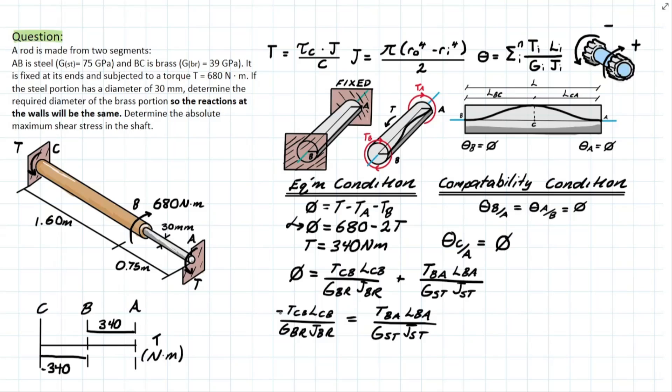So let's see what that looks like: we have a negative times a negative 340 which is going to give us 340 positive, and the units are going to be newton meter for that one. And then we have the length CB which is 1.6 meters. Then on the bottom we're going to have the 39 GPa times 10 to the 9 to convert that to pascals which is equivalent to newton meters squared. And then the polar moment of inertia for the brass which is pi over 2 from this formula up here, and the radius which is R_BR in our case, and this unit will be meters to the 4.